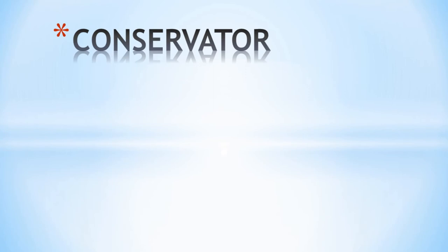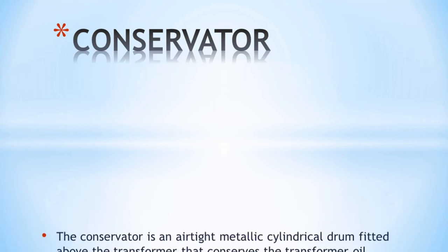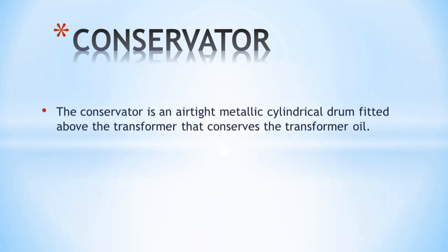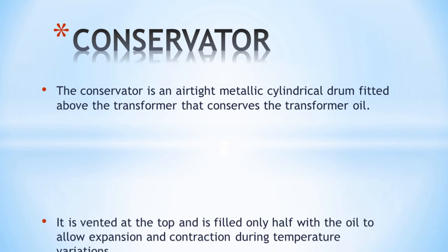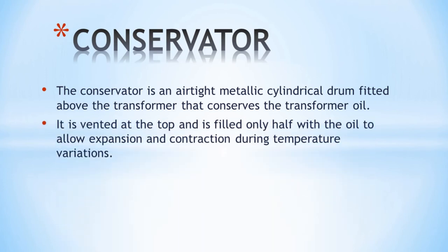Another part is the conservator. The conservator is an airtight metallic cylindrical drum fitted above the transformer that conserves the transformer oil. It is vented at the top and is filled only half with oil to allow for expansion.